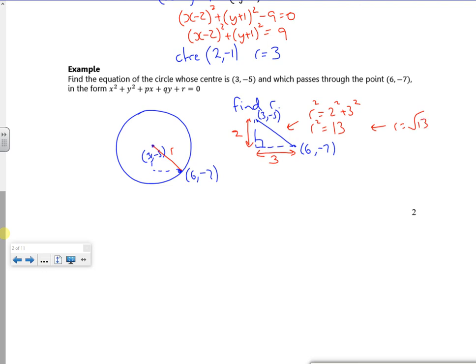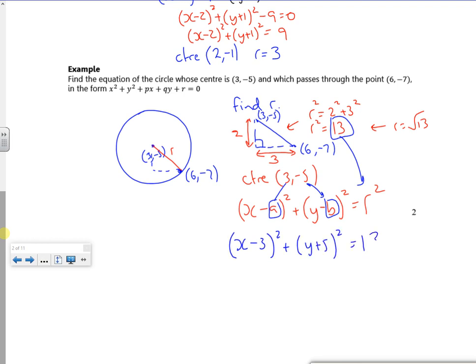Right, so I know my centre is (3, -5). If you remember it was (x - a)² + (y - b)² = r². So I can replace a with 3, b with -5, and r² with 13. So I've got (x - 3)² + (y + 5)² = 13.